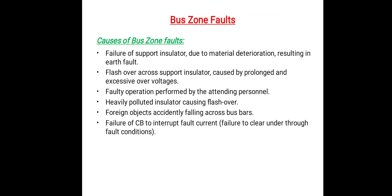The next topic is the basic causes for bus zone faults. According to statistical information, the majority of faults are basically single-phase in nature and temporary in character. The causes of this type of faults are: failure of support insulator, flashover across support insulator, faulty operations performed by attending personnel, foreign objects accidentally falling across the bus bars, and failure of circuit breakers to interrupt fault current or failure to clear under through-fault current. The clearing of a bus fault requires the opening of all circuits branching from the faulty bus or bus section.